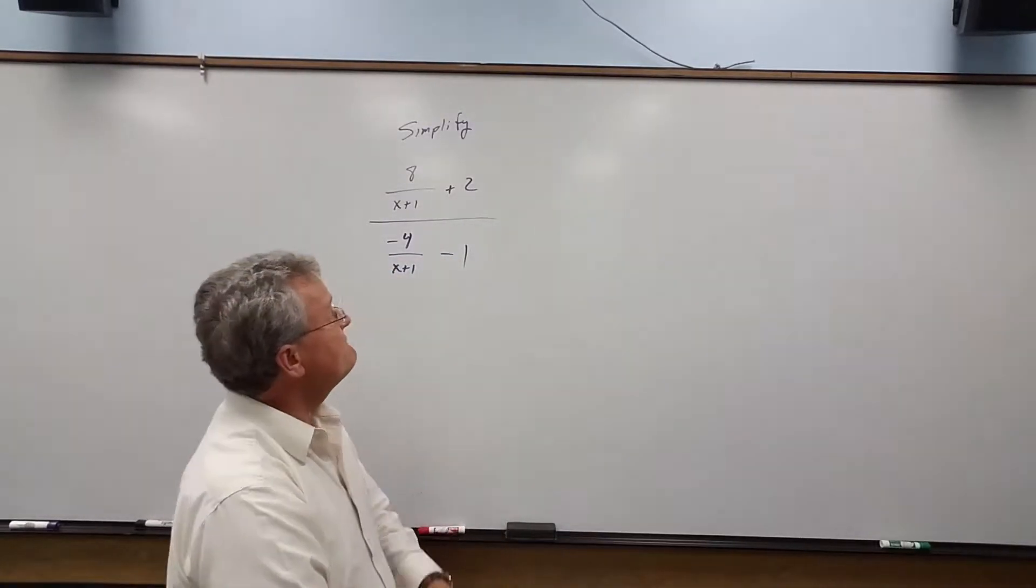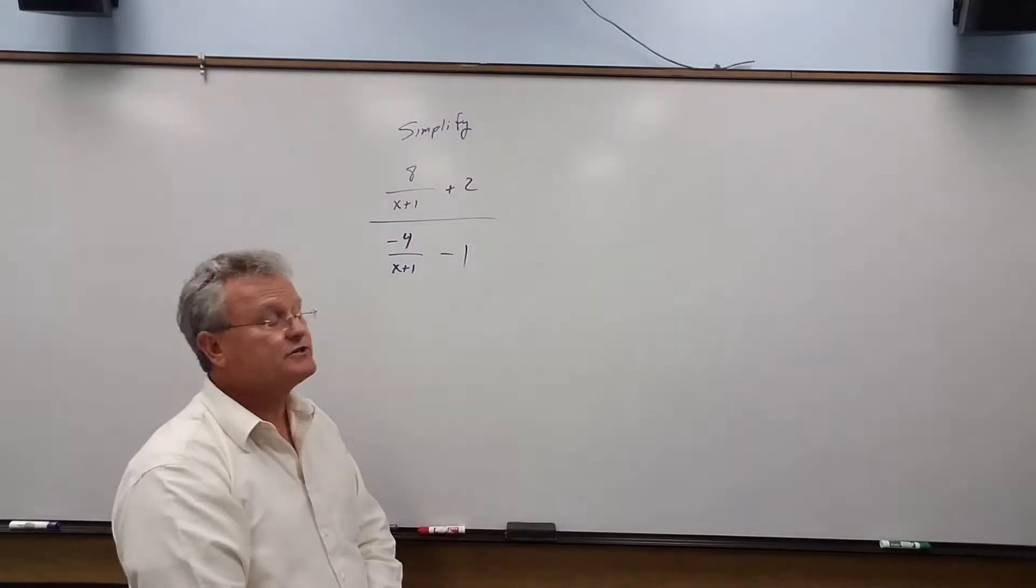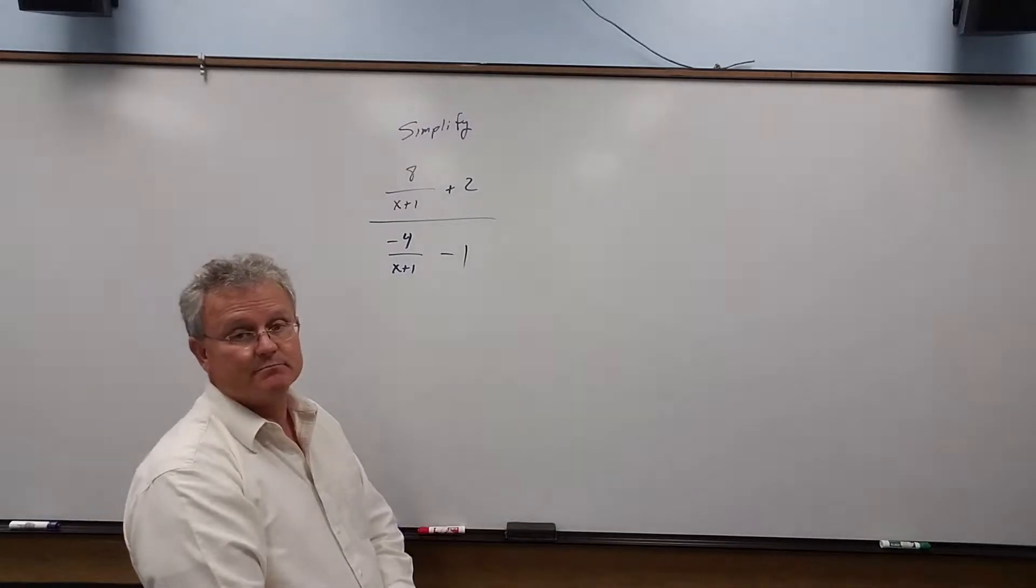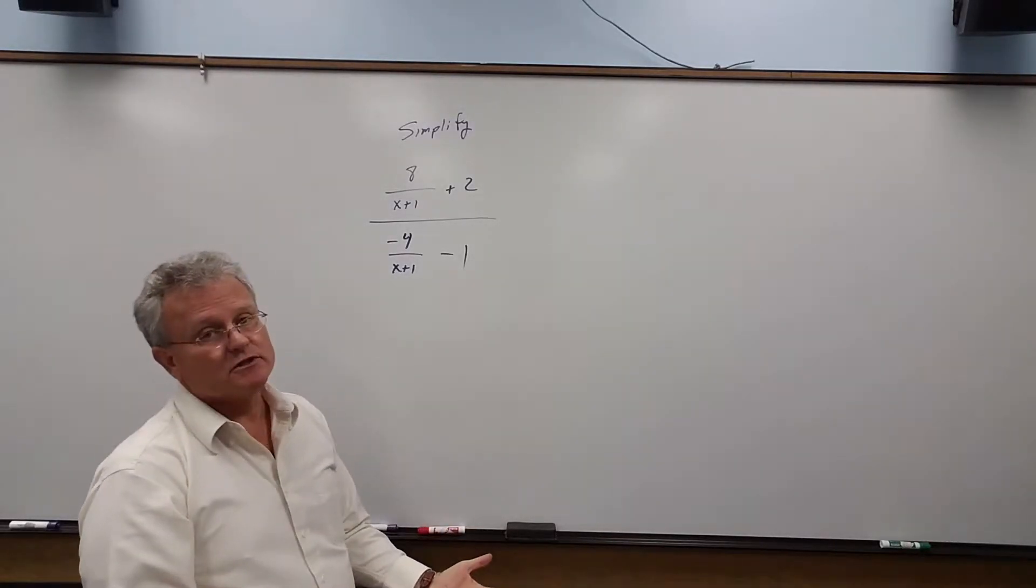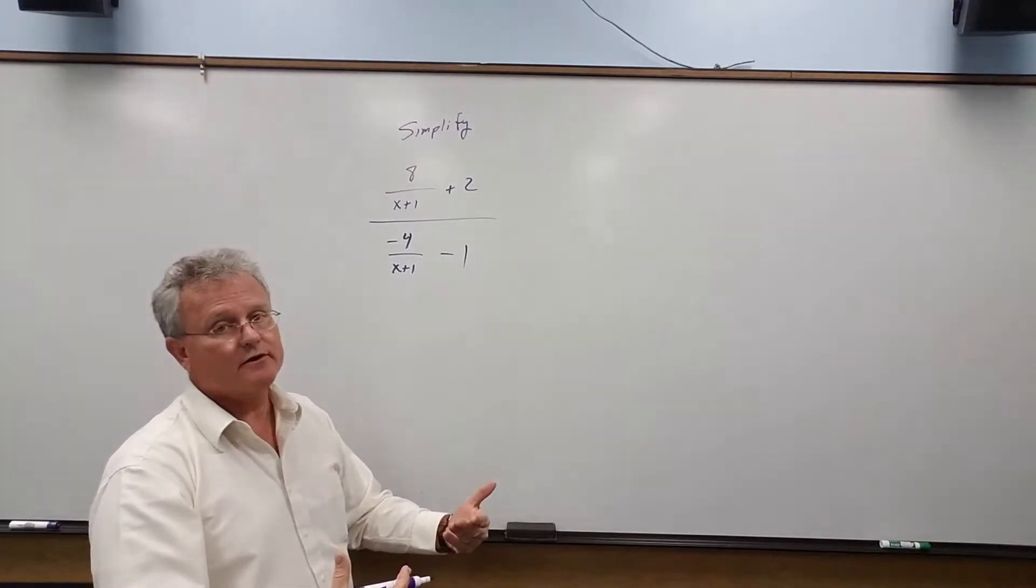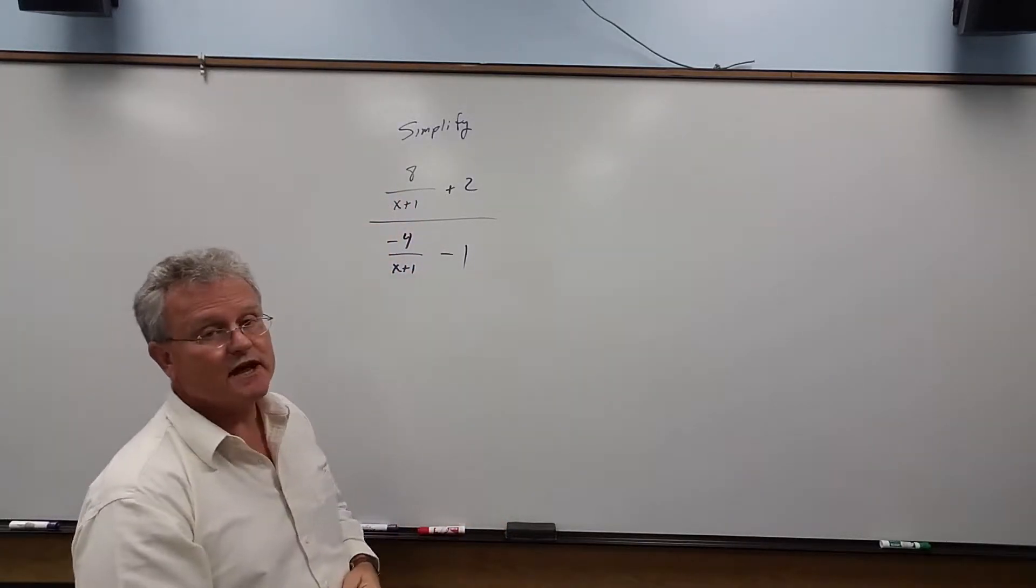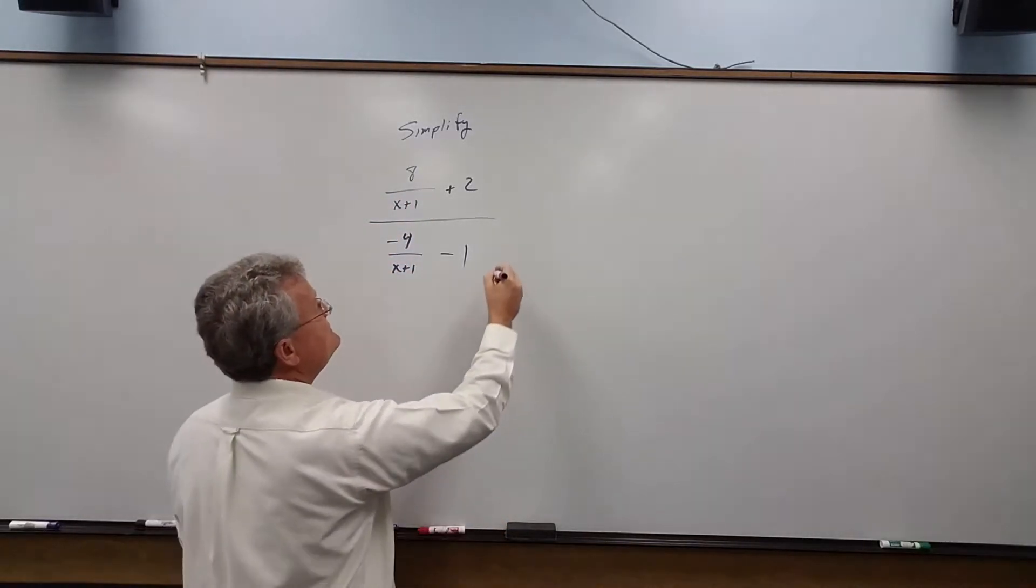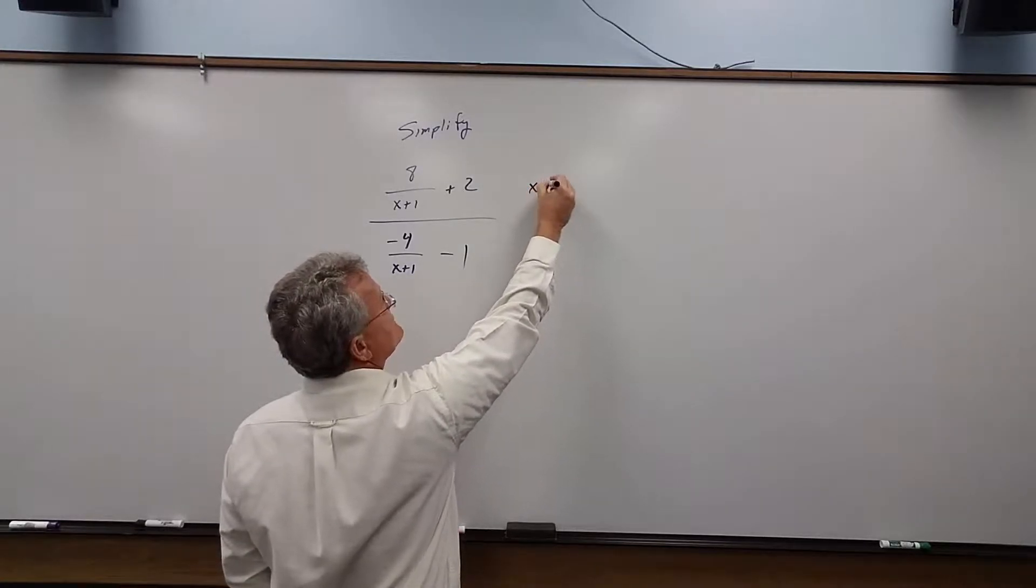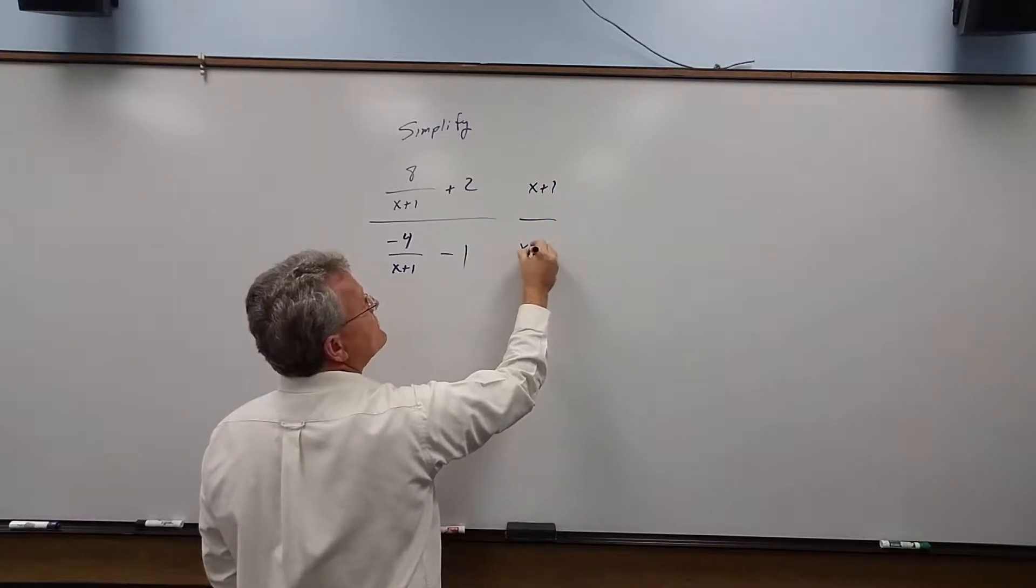Now we're going to simplify a complex fraction. We know to simplify these we multiply the numerator and denominator by the LCD. In this case there's only one denominator, so that is the LCD. We multiply by x plus 1 over x plus 1.